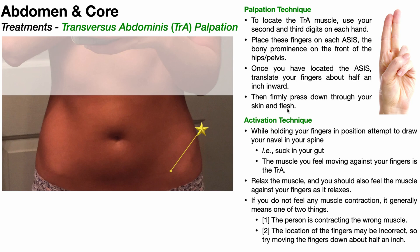That is the palpation technique. You need to be pressing down with your fingers pretty firmly, as much as you can tolerate. You're not going to feel the muscle just by pressing there — you actually need to contract it and feel it move against your fingers. So while holding your second and third digits in that position, you want to attempt to draw your navel in toward your spine. You might tell your patient to suck in their gut, and the muscle they feel moving against their fingers is the transversus abdominis.